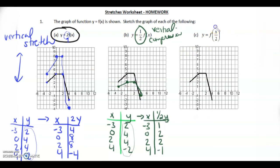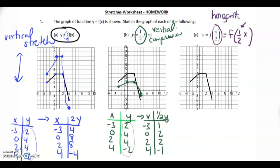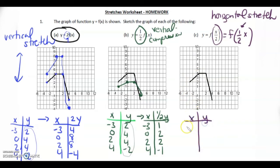Now this is switching a little bit. This can also be rewritten as f at one half x. What this means is this is a horizontal stretch. Remember, everything around the x looks opposite of what it's actually doing. So this looks like it would be a compression because it looks like a one half, but it's actually a stretch.